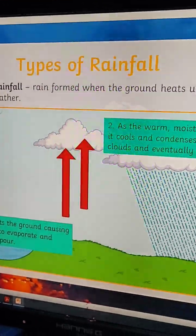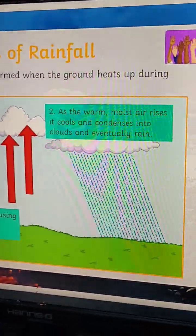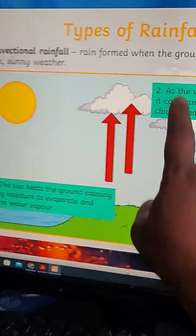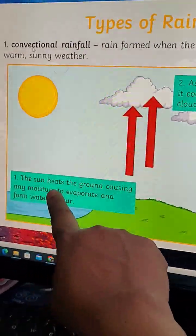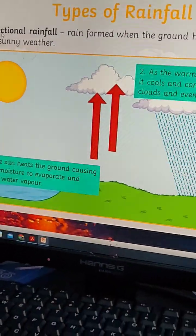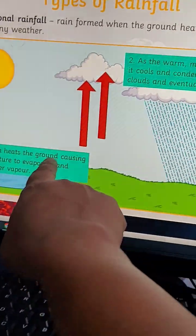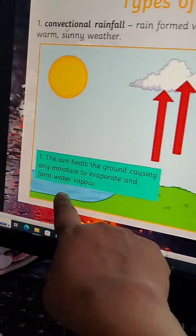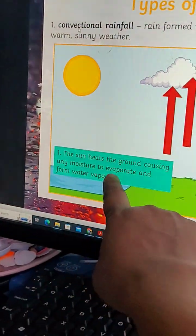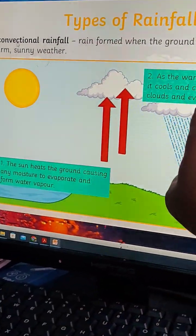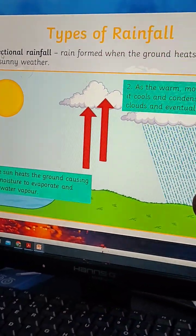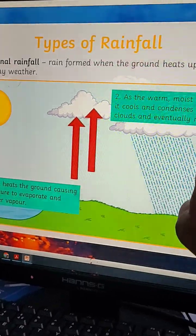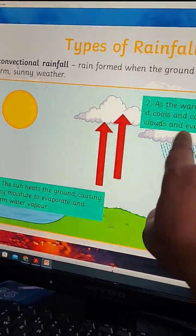Now, types of rainfall. Type one: conventional rainfall. Rain is formed when the ground heats up during warm sunny weather. The sun heats the ground, causing any moisture to evaporate and form water vapor. As the warm air rises, it cools and condenses into clouds.